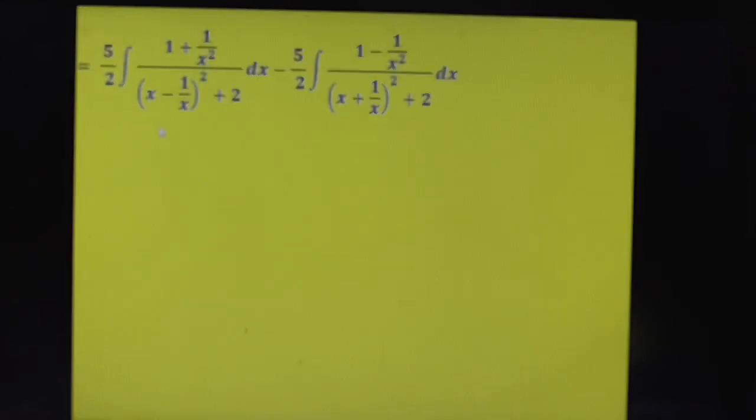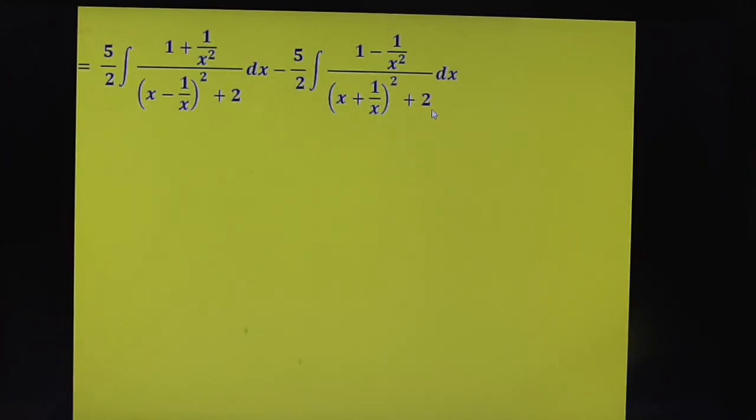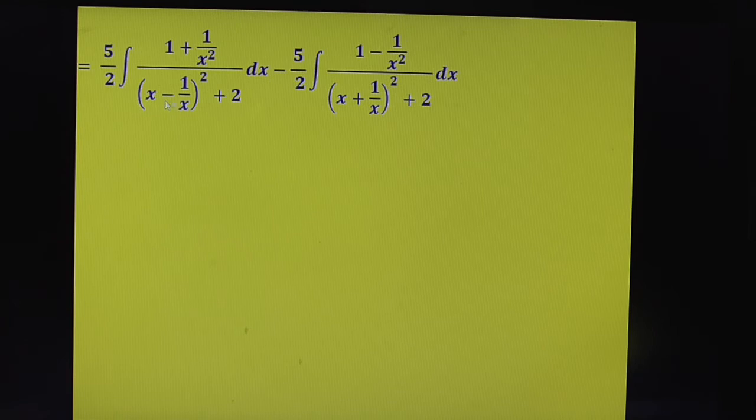We are applying a square plus b square equal to a minus b whole square plus 2ab. Here, it is a plus b whole square plus 2ab. I hope you all catch this concept. Very simple. What is the next step?